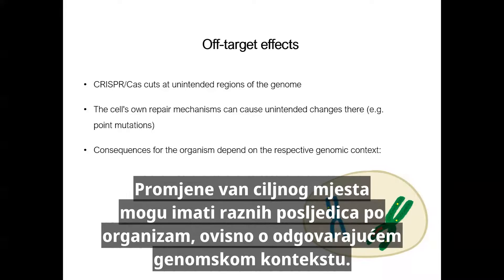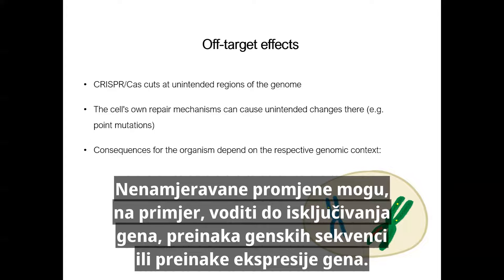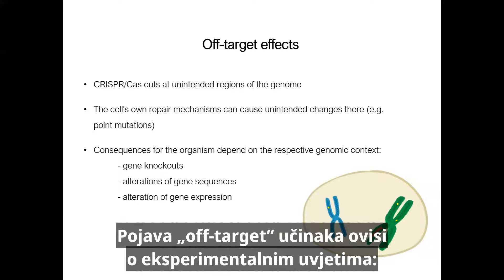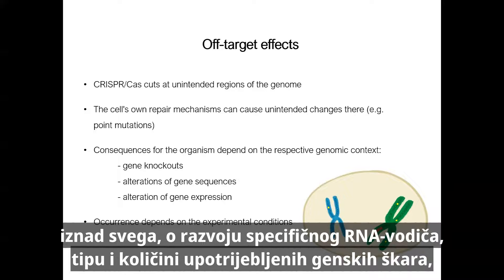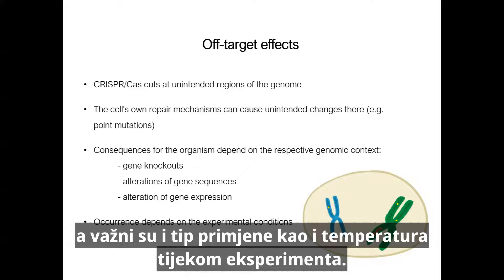The off-target changes can have various consequences for the organism and depend on the respective genomic context. The unintended changes can lead, for example, to gene knockouts, to alterations of gene sequences, or to an alteration of gene expression. The occurrence of off-target effects depends on the experimental conditions. Above all, the development of a specific guide RNA, the type and amount of gene sequences used, the type of application, and also the temperature during the experiment play an important role.